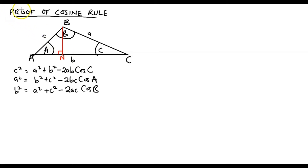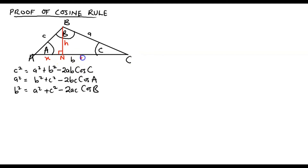The side AC has been partitioned into two parts at N. We label one part — the distance AN — as x. Therefore, the distance from N to C is b minus x, because b minus x plus x gives you the full length of AC. From our original triangle, we now have two right-angle triangles with new sides introduced.